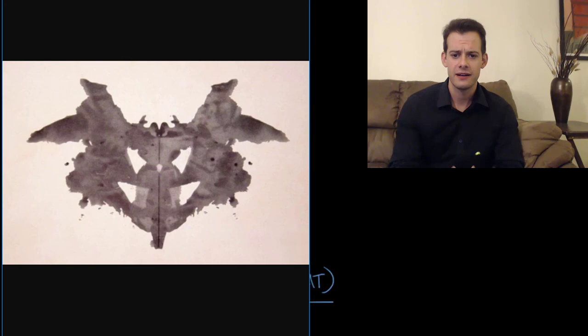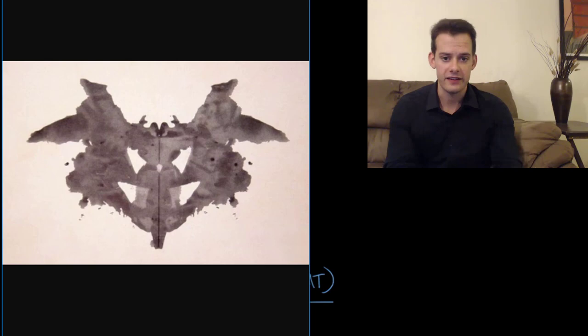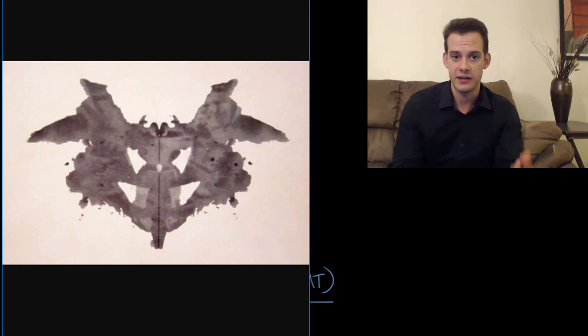And so the inkblot test involves looking at these ambiguous inkblots and being asked to explain what it is that you see. So a participant might look at a slide like this and say they see a butterfly or maybe they see this looks like a dog's head here or this looks like some other kind of insect or any number of possible responses. And the idea is that by looking through a series of these slides and I'll post a link in the video description where you can see more of these. The Rorschach original slides are in the public domain now so you can view them online.